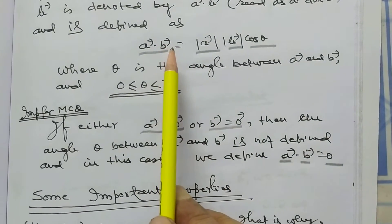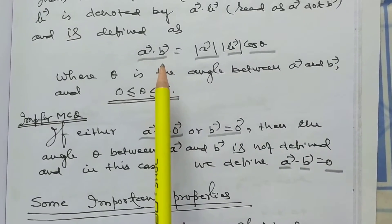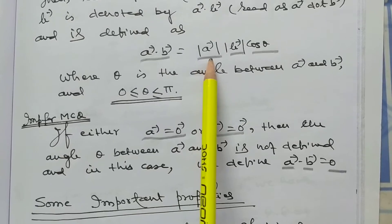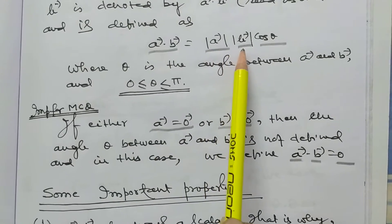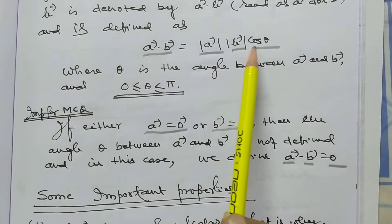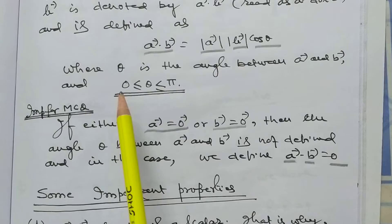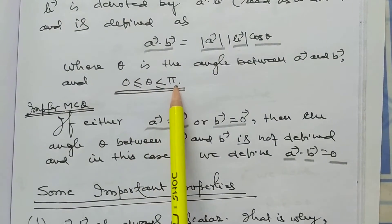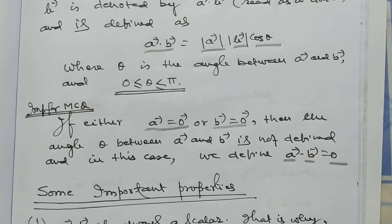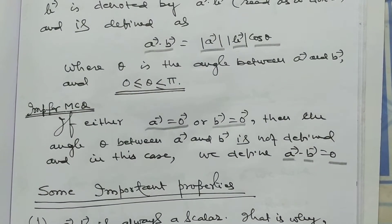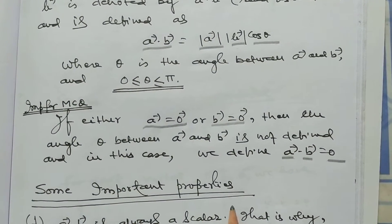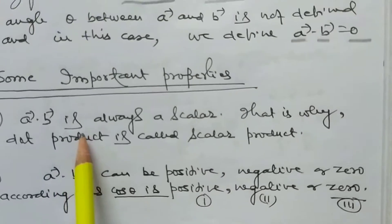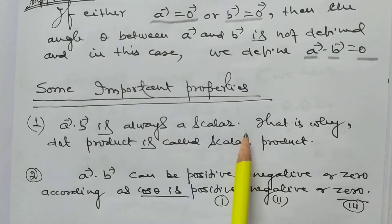Here, try to understand: the magnitude of vector A dot vector B is equal to magnitude of A times magnitude of B times cos theta, where theta lies between 0 and pi, including 0 and pi. Now I want to discuss some important properties. Vector A dot vector B is always a scalar; that is why dot product is called scalar product.